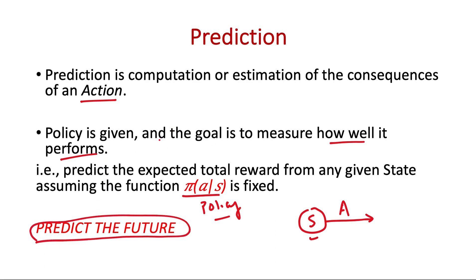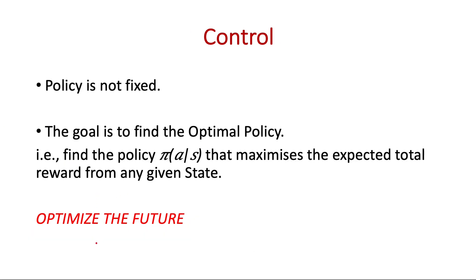Let's see how this is different from control. Control is about optimizing the future, whereas prediction is about predicting the future. In control, the policy is not fixed.